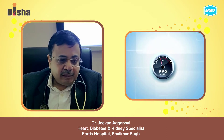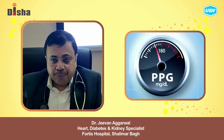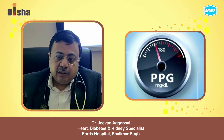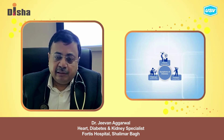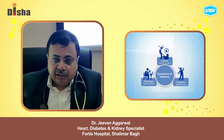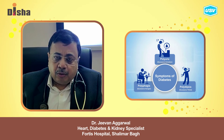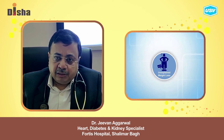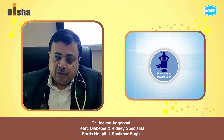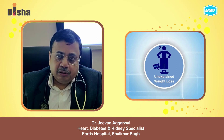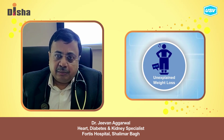Or if a patient has a random blood sugar of more than 200 and is having signs and symptoms of diabetes, like increased thirst, increased hunger, increased urination, or a major weight loss or weight gain, then he or she should be considered as a case of diabetes.